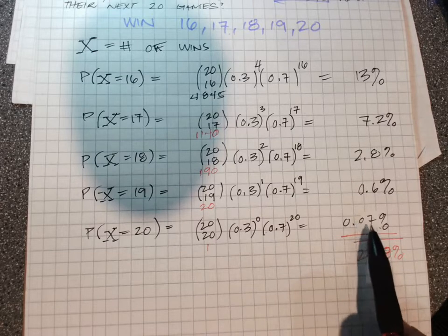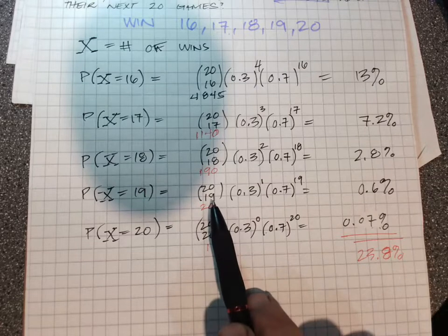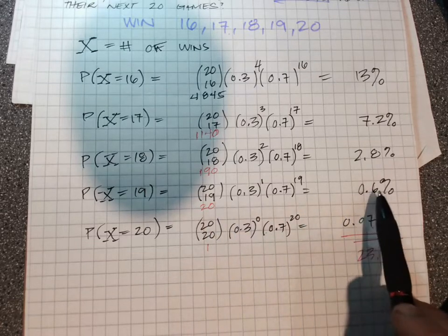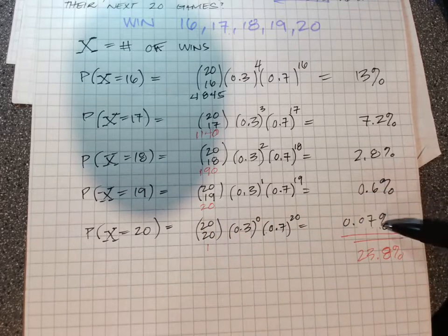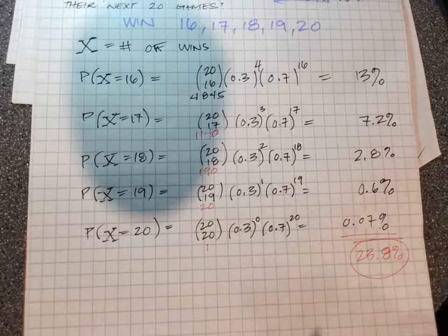This last one, winning all 20 games, is incredibly unlikely, so it's less than even a hundredth of a percent. Even winning 19 of the games is less than one percent chance of that, highly unlikely, but we still include them. So that's the answer.